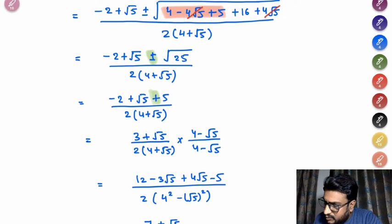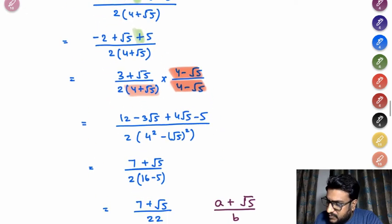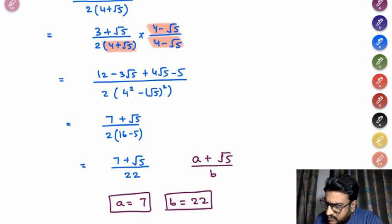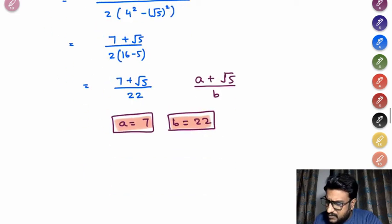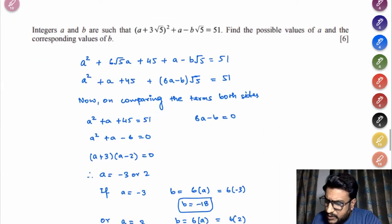Now again your denominator over here is irrational which is 4 plus √5. So conjugate of this would be 4 minus √5, simplifying this. Now we will get 7 plus √5 by 22. And we are supposed to give our answer in A plus √5 by B. So we can easily compare and say the value of A is 7, B is 22. Clear? Simple?